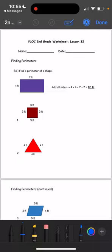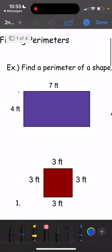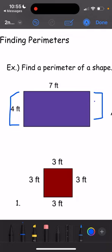A perimeter is the length of the entire shape. When we're looking at the example rectangle, this side over here is 4 feet, which means the same side over here will also be 4 feet. This side is 7 feet, so the same side over here will also be 7 feet.